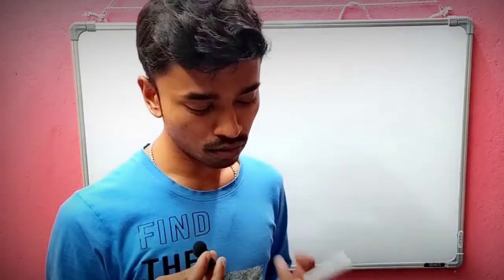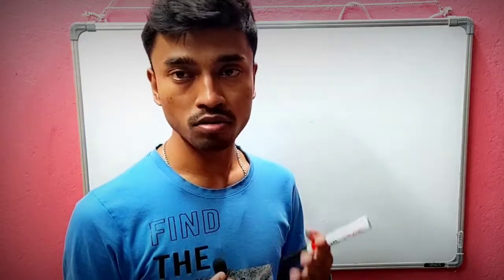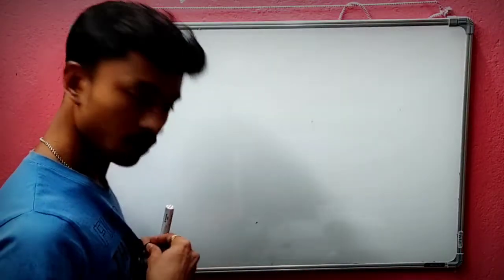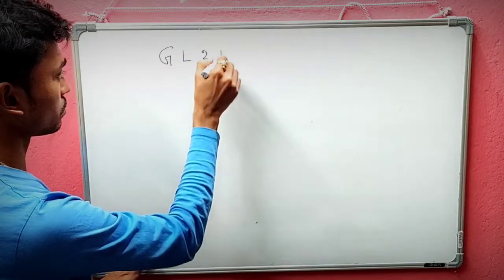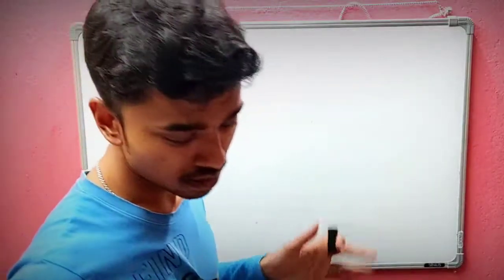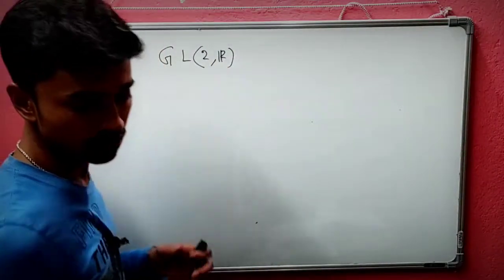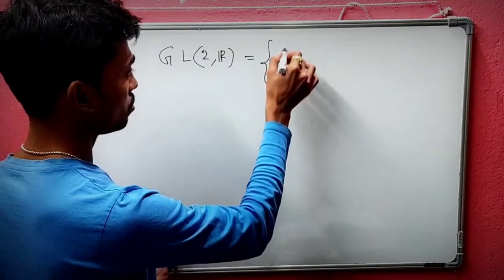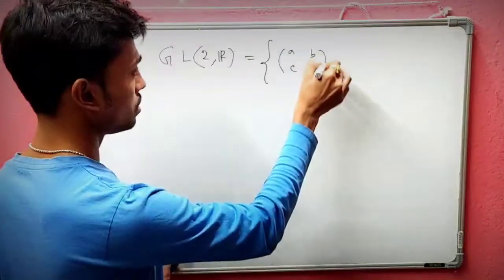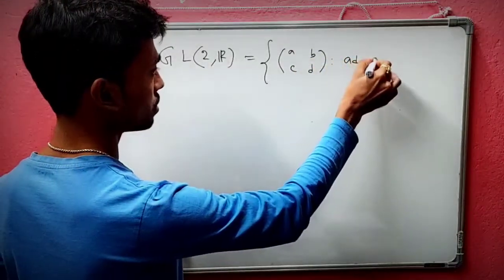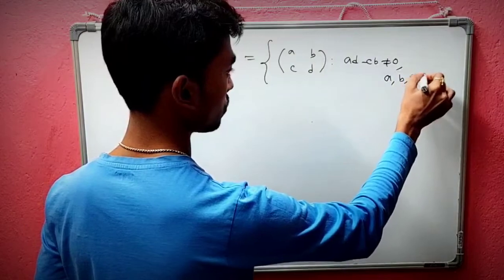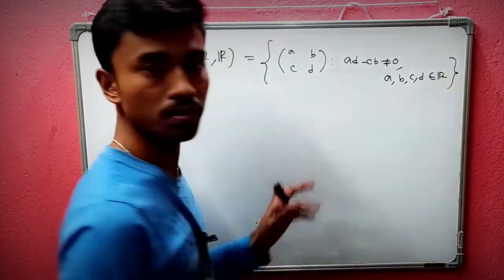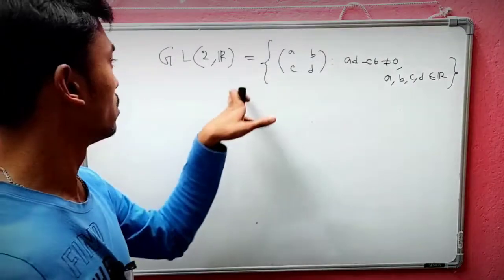R* is sometimes called R-plus, but more precisely R* means the non-zero real numbers — that's very important. So GL(2,R) consists of all matrices [a b; c d] such that ad minus cb is not equal to zero, where a, b, c, d belong to R.